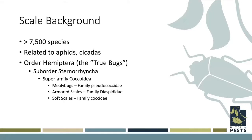Scale insects fall into a few different families. Mealybugs are typically found on indoor or greenhouse plants and are in their own family. Then we have two other types: armored scales in the family Diaspididae and soft scales in the family Coccidae. They're closely related but not in the same exact grouping — just know there are different types of scale insects in different families.